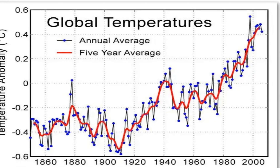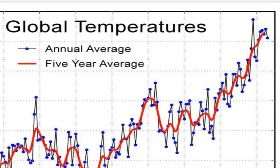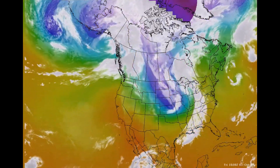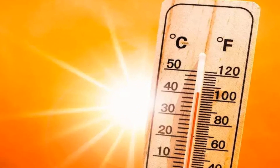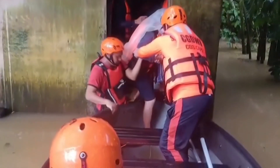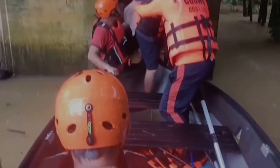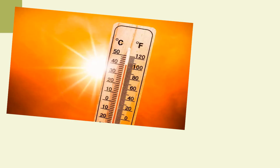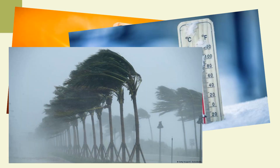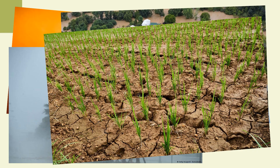The rising global average temperature is associated with widespread changes in weather patterns. Scientific studies indicate that extreme weather events such as heat waves and large storms are likely to become more frequent or more intense with human-induced climate change. While weather can change in minutes or hours, a change in climate develops over longer periods of decades to centuries, making the frequency, duration, and intensity of weather events such as heat waves, cold spells, storms, and floods unpredictable.